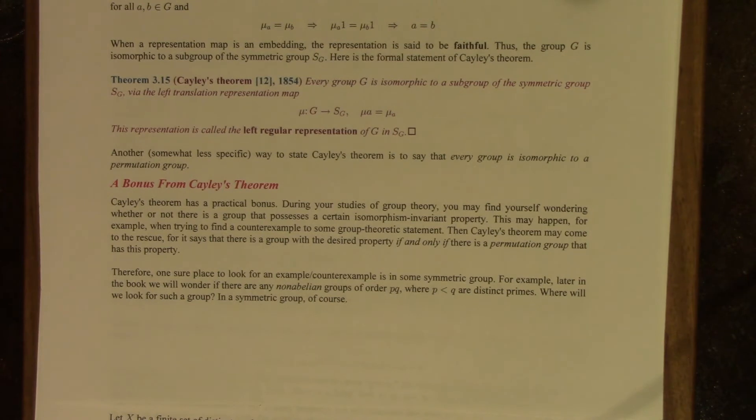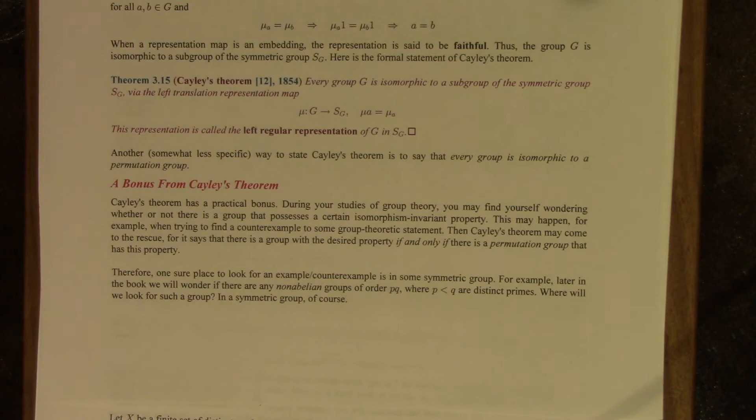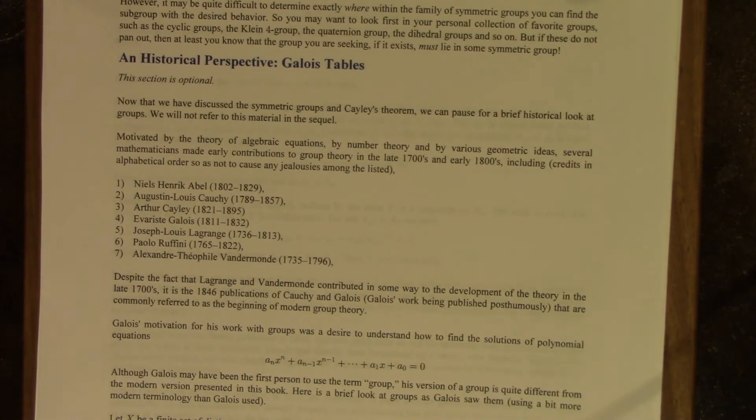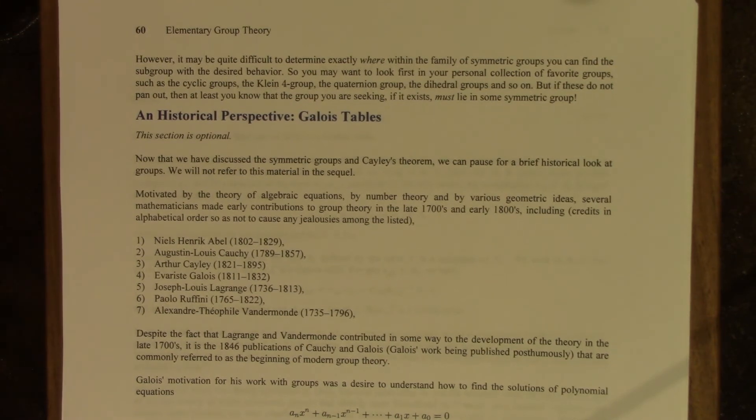So one sure place to look for an example or a counterexample is in some symmetric group. And we will do this later on in the book, quite a bit later actually. We are going to wonder if there are any non-abelian groups of order P Q, where P and Q are distinct primes. Where are we going to look? In a symmetric group. The trick of course is which symmetric group, and that's not so easy, this doesn't reduce the problem to triviality.